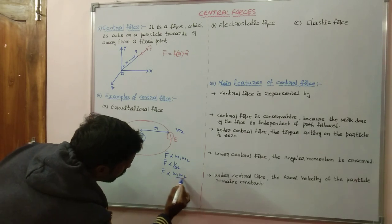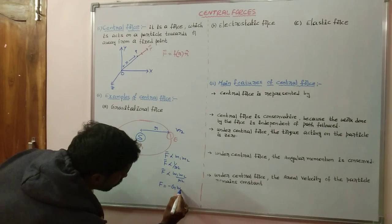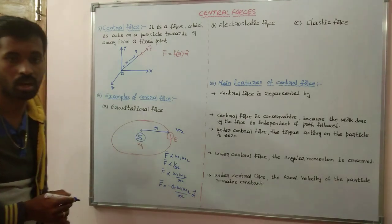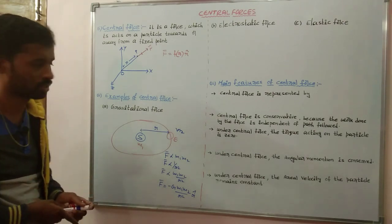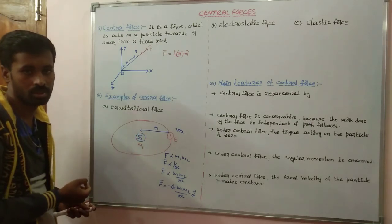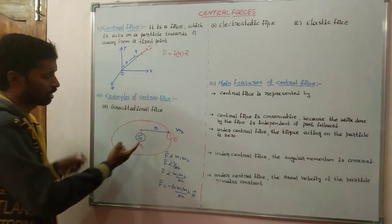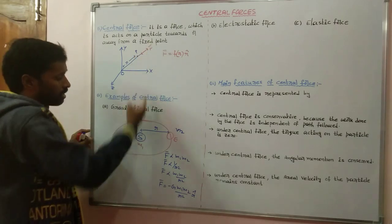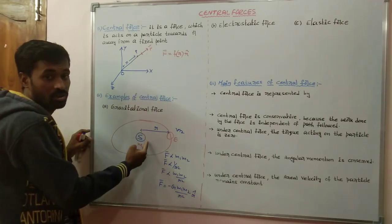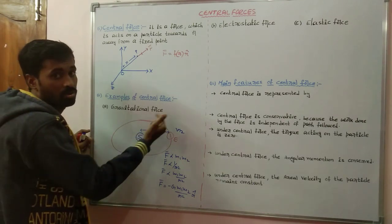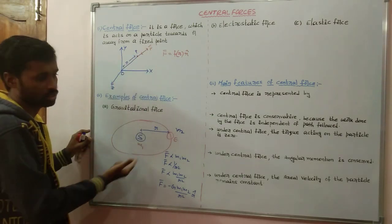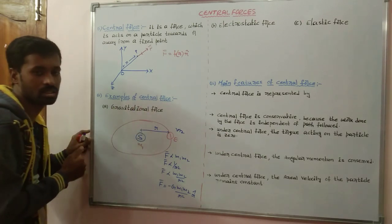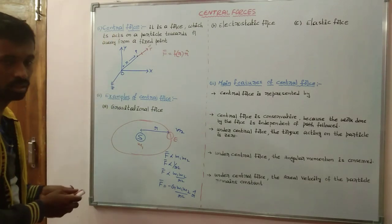So force is directly proportional to m1·m2 / r². Removing proportionality, we introduce the gravitational constant. In vector form: F bar = −G·m1·m2 / r² · r-cap. The minus sign represents attractive force — here a centripetal force exists that always acts toward the sun, which is our fixed point. That's why gravitational force is one of the best examples of central force.